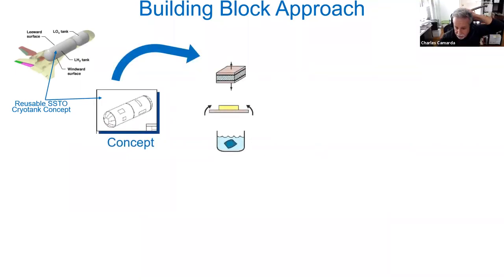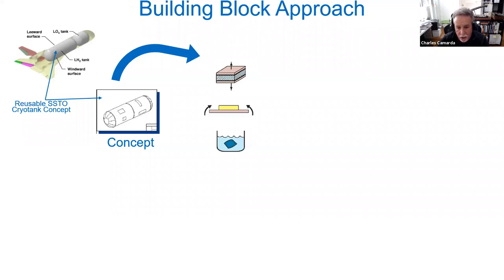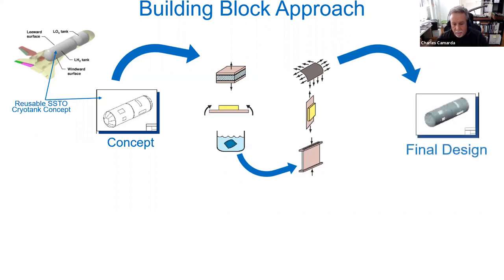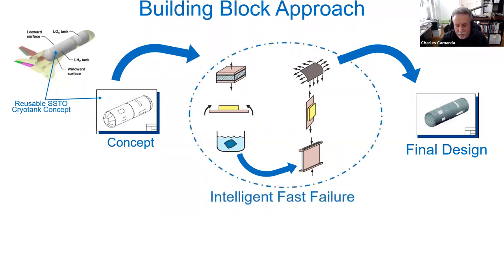One of the other things you learned in the ICED methodology was we use a building block approach. This is an example of a cryogenic tank for a reusable space vehicle. We look at all the different ways that particular concept can fail. Then we go into the laboratory and develop small tests to validate whether those failures will occur, whether we understand them, and whether we can analyze and design for those ideas. We constantly build up, looking at larger and larger components into sections so we understand the interfaces, and we can predict how it fails as a larger system until we build and test a full-scale version.